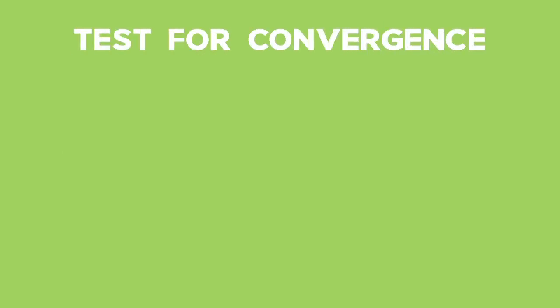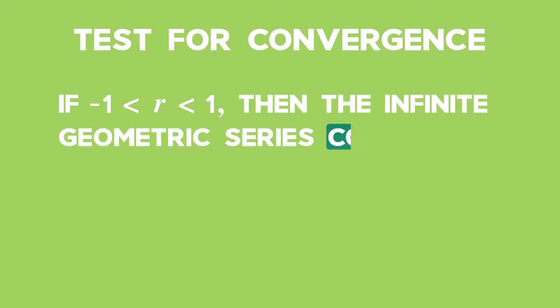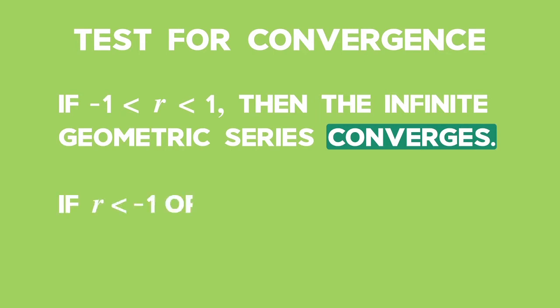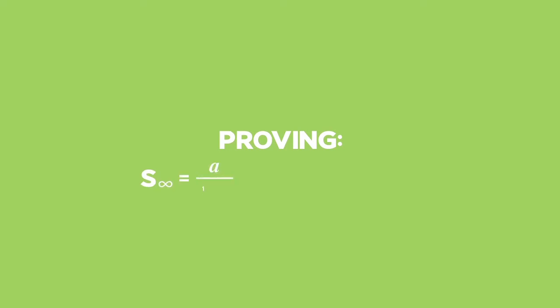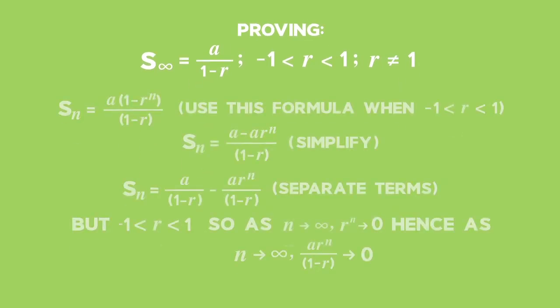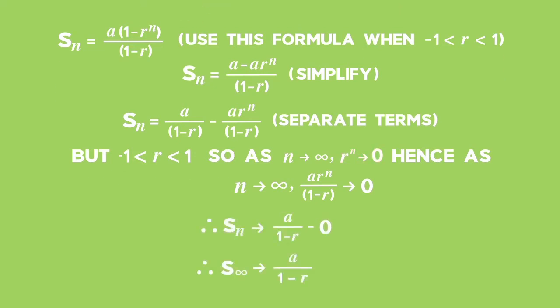Test for convergence. If r lies between negative 1 and 1, then the infinite geometric series converges. If r is less than negative 1 or r is greater than 1, then the infinite geometric series diverges. It can be shown that the sum to infinity is equal to a divided by 1 minus r, if r lies between negative 1 and 1. We see this because as n tends to infinity, r to the power of n tends to 0, and so the second term in the expression for Sn also tends to 0, leaving only the first term a divided by 1 minus r.